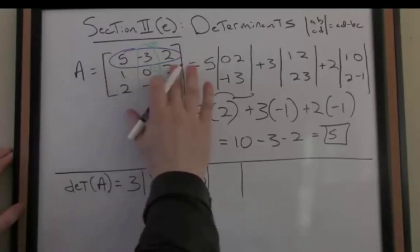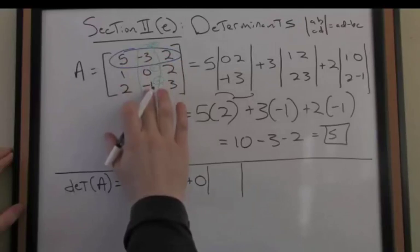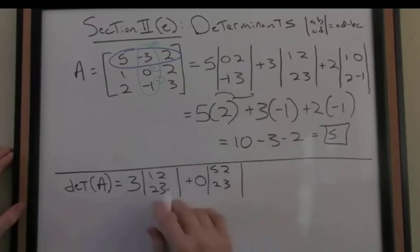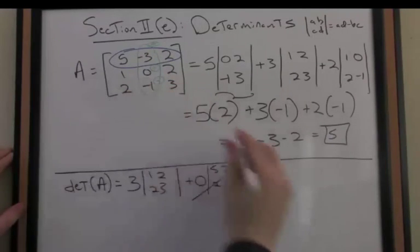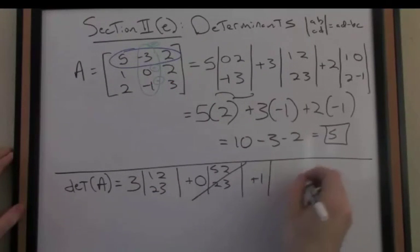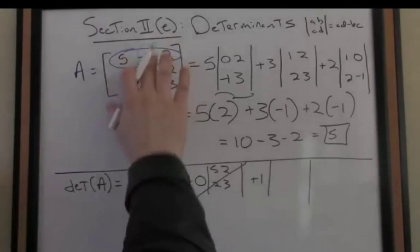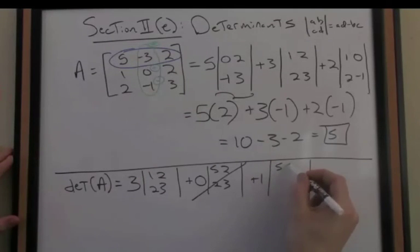But the submatrix associated with 0, when I remove now column 2 and row 2 is going to be 5, 2, 2, 3, so that just goes away. And then I go minus, minus, plus 1 when I alternate sign, and I multiply by the determinant of the submatrix corresponding with negative 1 here. So I'm going to remove row 3, column 2, and that leaves me with 5, 2, and 1, 2.